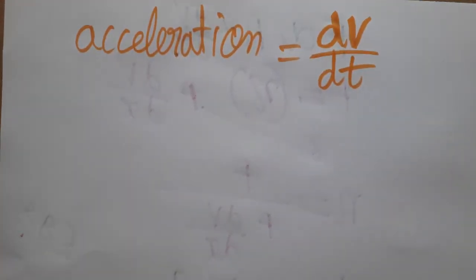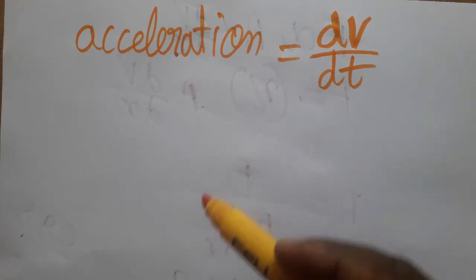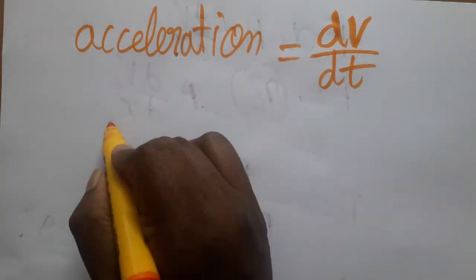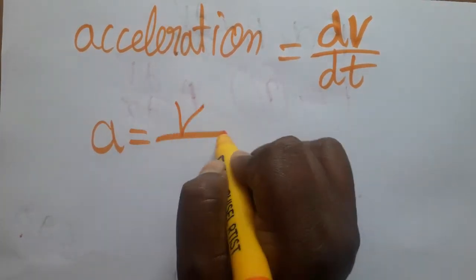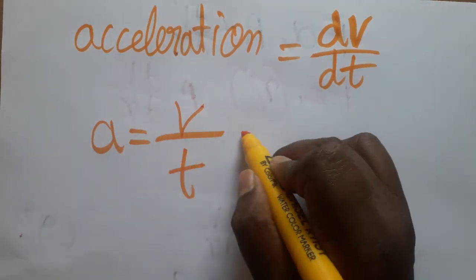Hello friends, today we are going to discuss the SI unit and dimensional formula for acceleration. Acceleration is the rate of change of velocity, so acceleration equals velocity by time. Velocity is displacement by time.